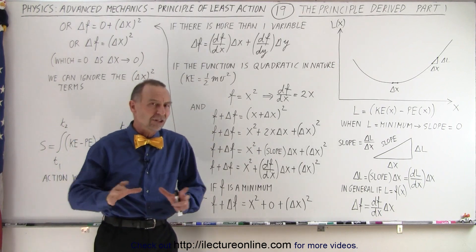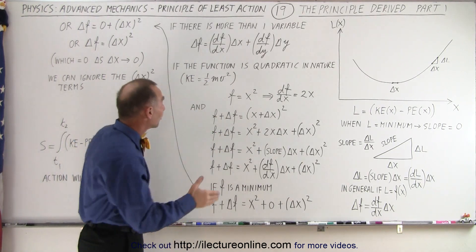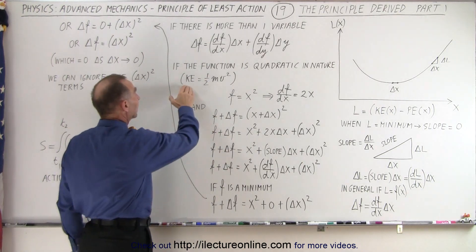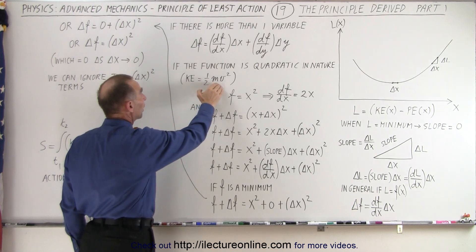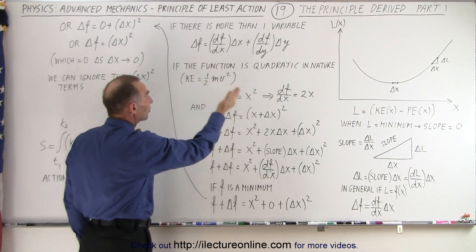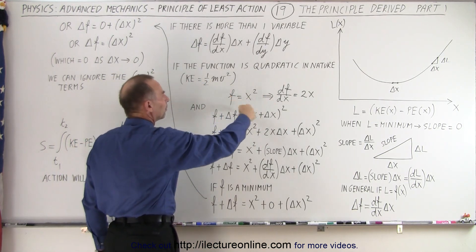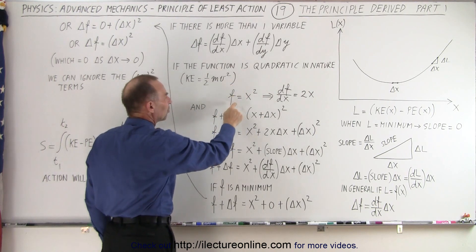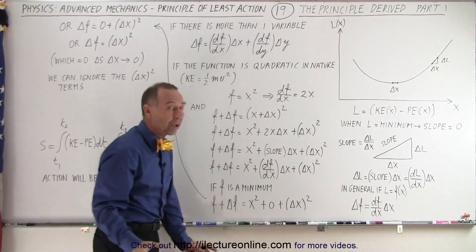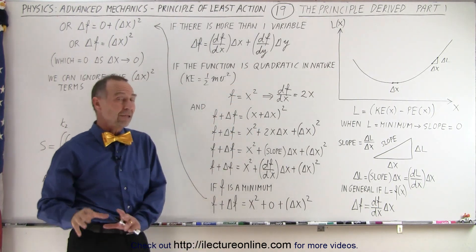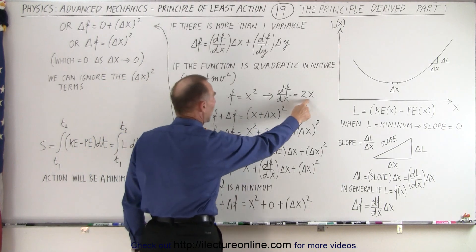Generally, the function is in a quadratic format. For example, the kinetic energy being equal to one-half mv squared. So we can say that the function can, in general, be expressed in terms of f equals x squared. And if we take the derivative, that is equal to 2x.